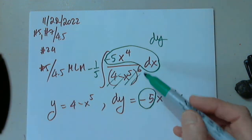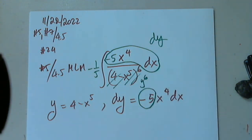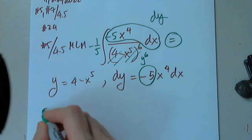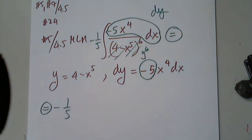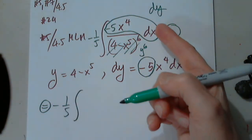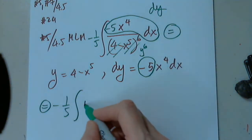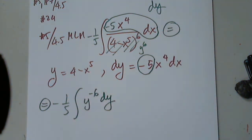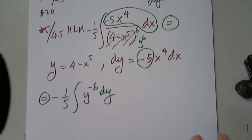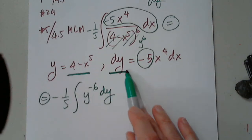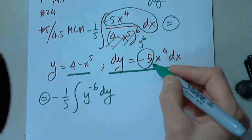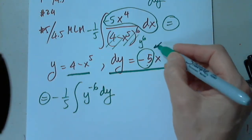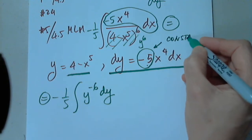This is no problem at all because this is y to the sixth. So my next step would be to copy the negative one fifth — you cannot forget about that — and the integral now is dy over y to the sixth, or y to negative 6 dy. I simplified all this tremendously by using the substitution, finding dy, realizing that x to the fourth dx are there. The only thing that I'm missing is a constant or factor.